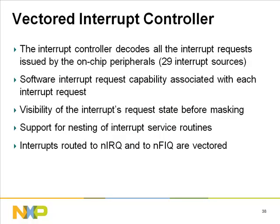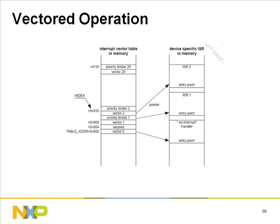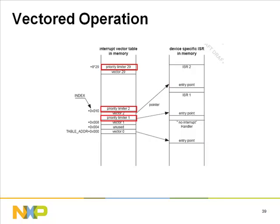The vectored interrupt controller decodes all interrupt requests issued by the 29 on-chip interrupt sources. Software interrupt request capability is associated with each interrupt. Nesting of interrupts is supported and interrupts routed to IRQ and FIQ are vectored. The core uses the int vector register containing the base address of a table and an index number. Each entry is a combination of a vector and a priority limiter — the vector branches to the respective ISR and the priority limiter controls nesting.